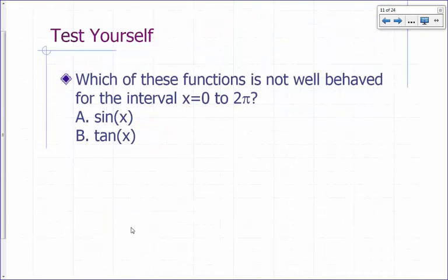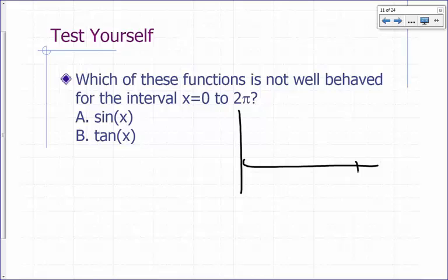Which of these functions is not well-behaved for the interval from x equals 0 to x equals 2π? What does sin x look like from 0 to 2π? So it's continuous, first derivative, second derivative exists.